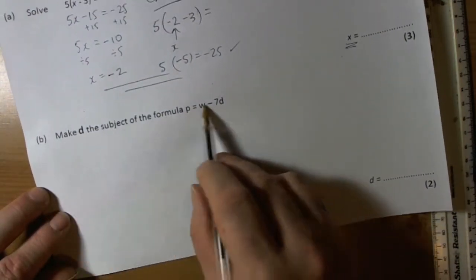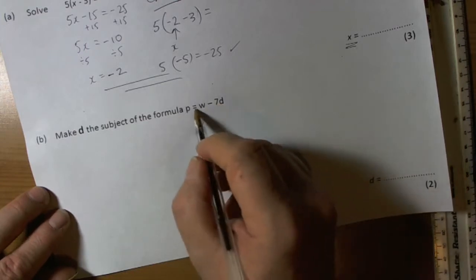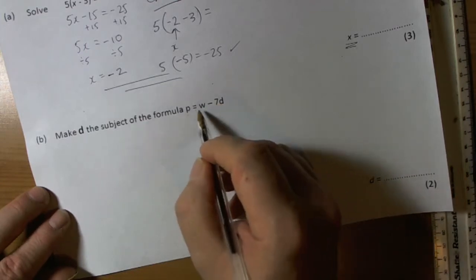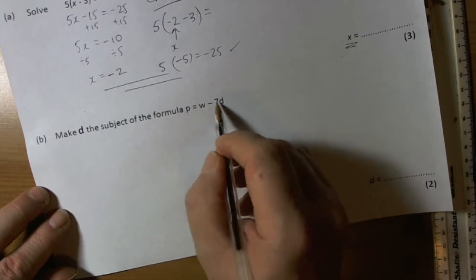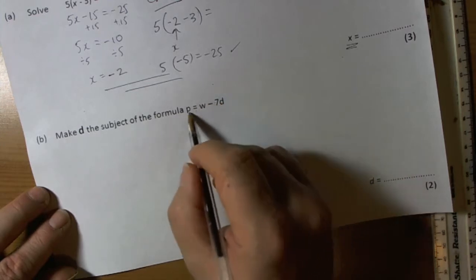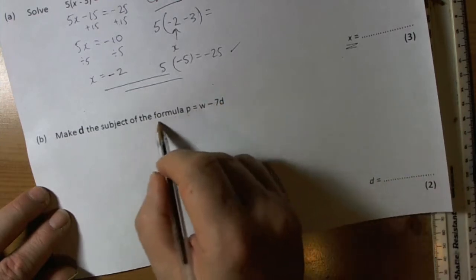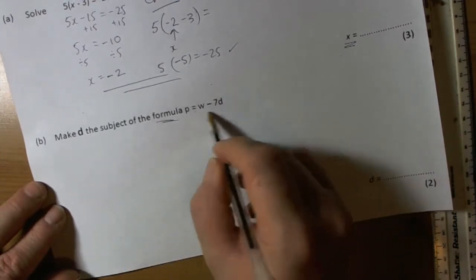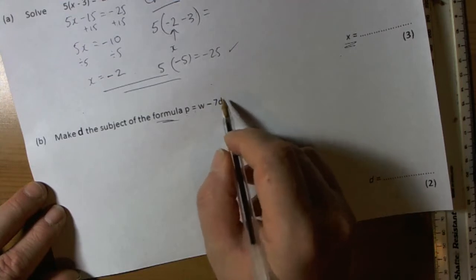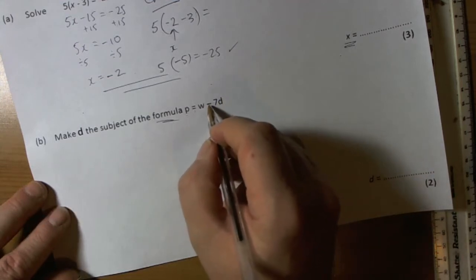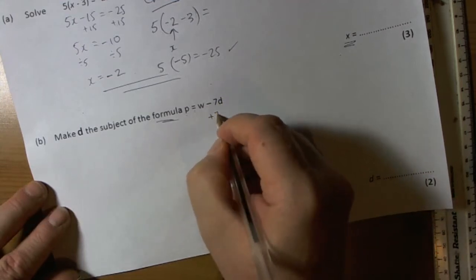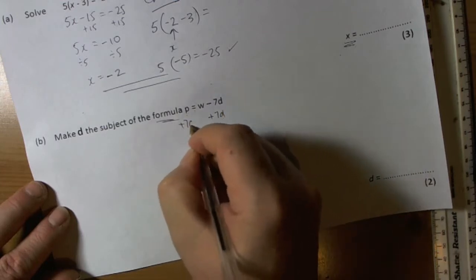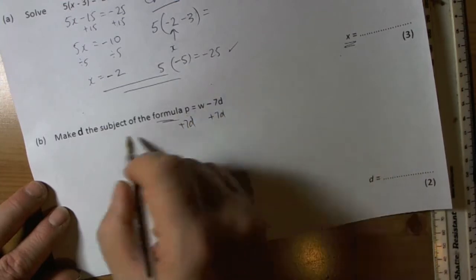The question then goes on and asks us to make d the subject of this formula. It's a formula because we've got a subject letter equal to some other letters. If you want to make d the subject, that means I move everything away from d. This is saying minus 7d, so the best thing to do would be to add 7d first because we want to make the d positive, because all subject letters are positive.